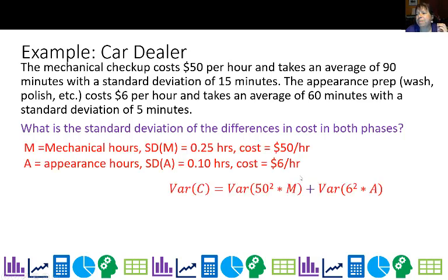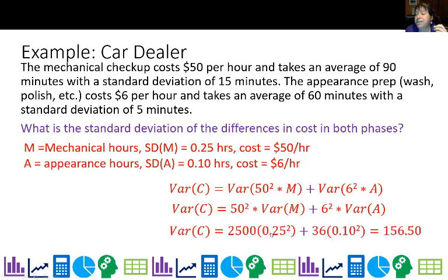Now let's find the standard deviation. This is the interesting part because we always add variances. Make sure that's a plus—variances always add. So we have 50² times Var(M) plus 6² times Var(A). I'm working in variances. The multipliers are squared because they go on standard deviation, so when squared for variance, they're squared. So 50²(0.25)² + 6²(0.1)² = 156.5, and the standard deviation is √156.5 = 12.51.